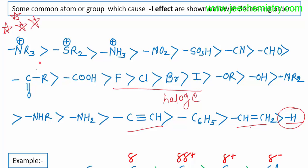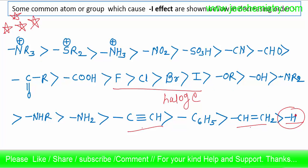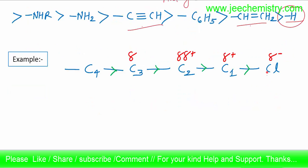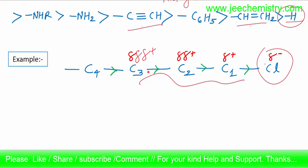For example, chlorine will attract electrons more towards itself, creating partial positive charges (δ+) on the adjacent carbons. The inductive effect extends only up to three carbons — after three carbons the effect becomes negligible. Only sigma electrons are displaced towards the electron-withdrawing group, and chlorine becomes the electron-rich, negatively charged end, giving it the minus I designation.